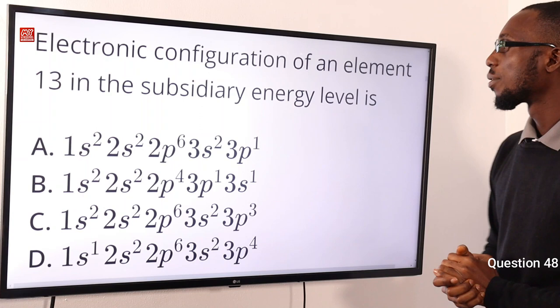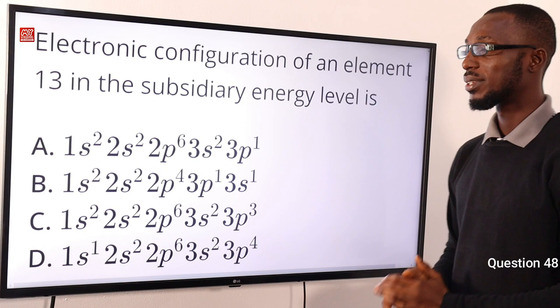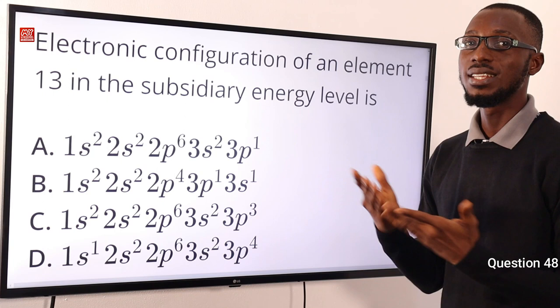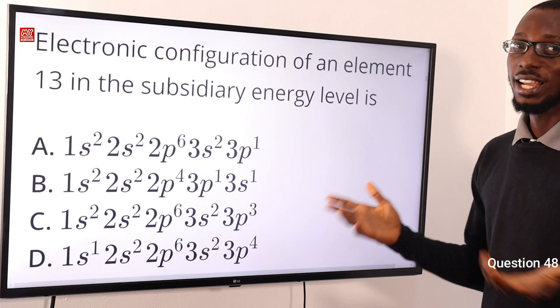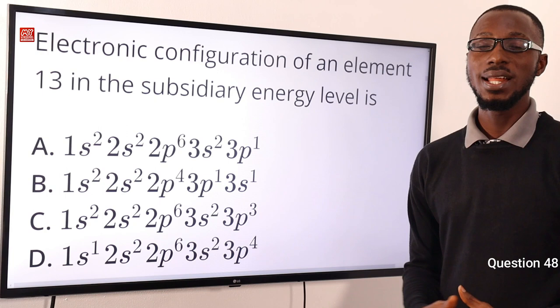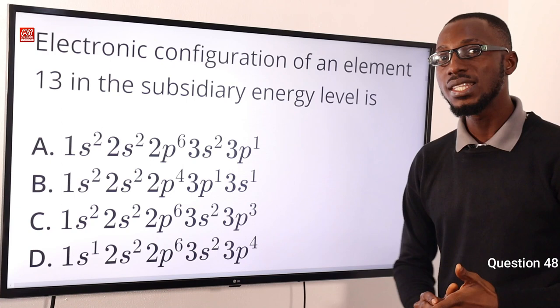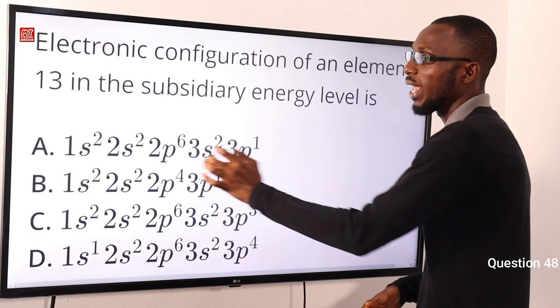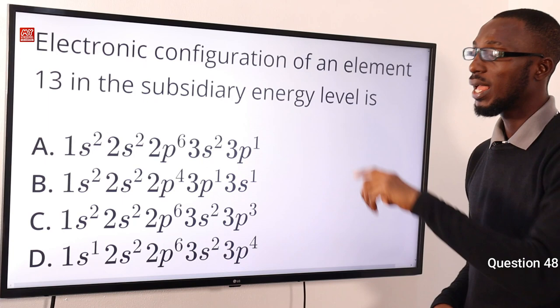Question 48: The electronic configuration of an element with atomic number 13 in the sub-energy level. When talking about sub-levels, we mean SPDF. The element with atomic number 13 is aluminum, giving 1S², 2S², 2P⁶, 3S², 3P¹. The correct option is option A.